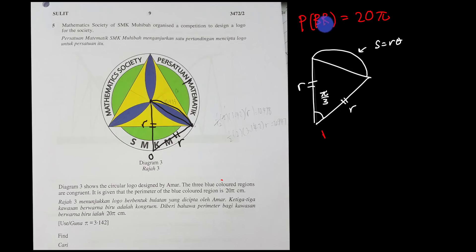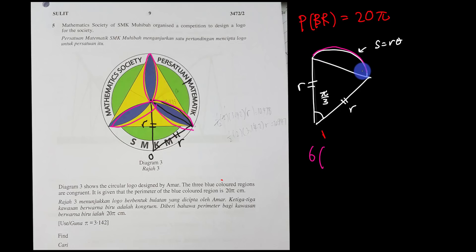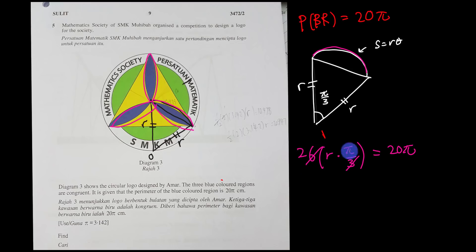The perimeter of the blue color region is made up of how many arc lengths? Looking carefully, there are six of them — one, two, three, four, five, six. So: 6 × rθ = 20π, where θ = π/3 and r is unknown.